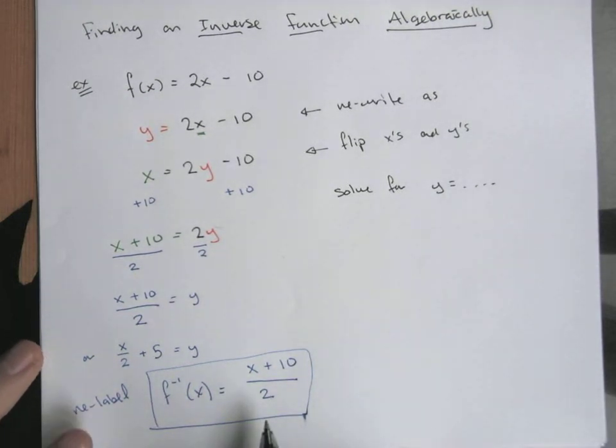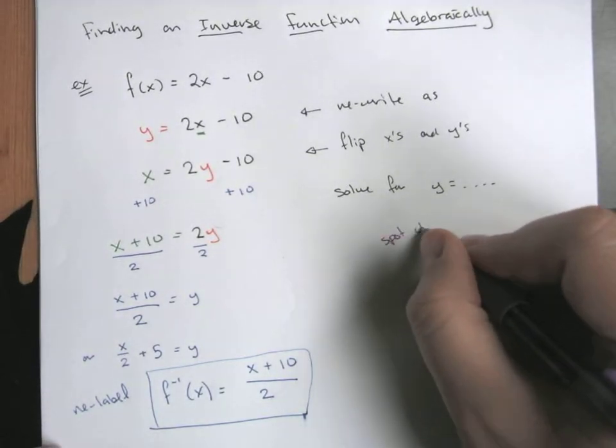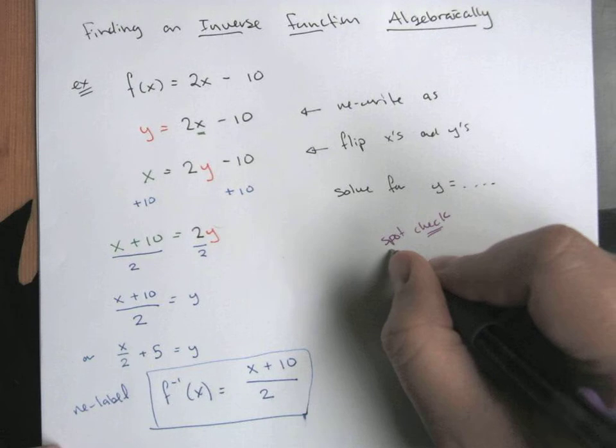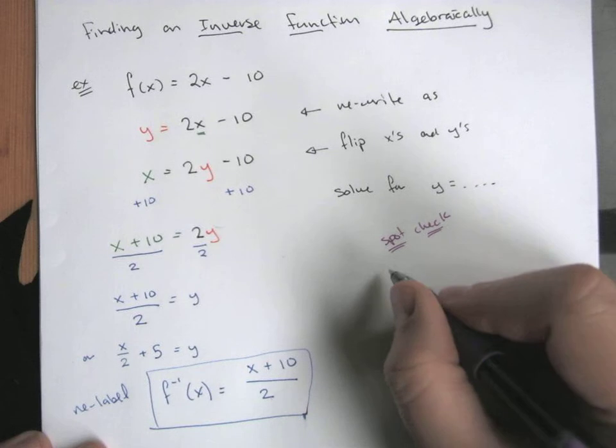My inverse is going to look like this. Once you have it, you can do a little bit of a spot check. You can do a more official check if you want by doing a composition of these two things. They should essentially undo each other and you're going to end up with just a single x.